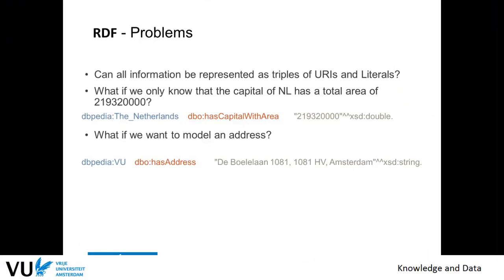For example, what if we only know that the capital of the Netherlands has a total area of — say, 219 or 291 million — but we don't want to create an object that we have to give a name to, even though we don't know the name? It might be sufficient just to state that information. We can split this into two bits: there is something that is the capital of the Netherlands, and it has the area of 219 million.